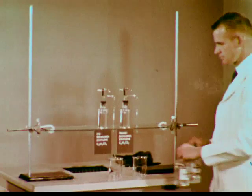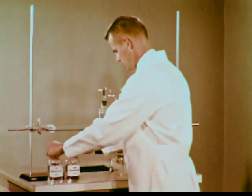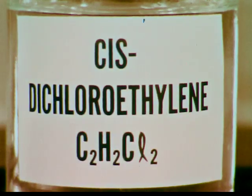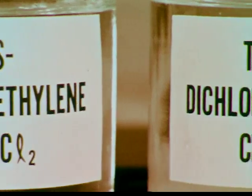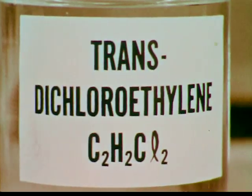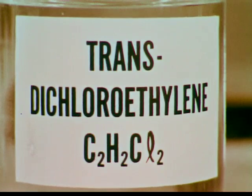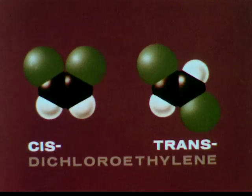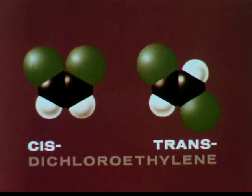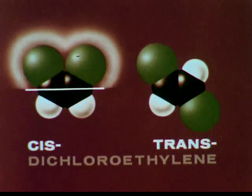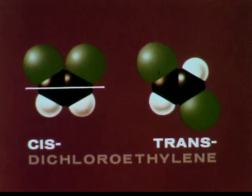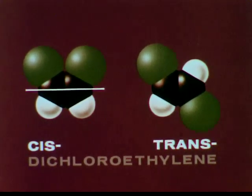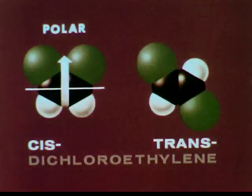To test our model of molecular dipoles, let's see if we can predict the effect of shape on the polarity of molecules. Here are two forms of dichloroethylene. One is called cis-dichloroethylene. The other is called trans-dichloroethylene. They have the same formula, but their structures are different. How will their differences in structure affect their behavior? In the cis, the two chlorine atoms are on the same side of the bond joining the carbon atoms. Chlorine atoms attract electrons more readily than do hydrogen atoms. Therefore, the cis molecule should be polar.